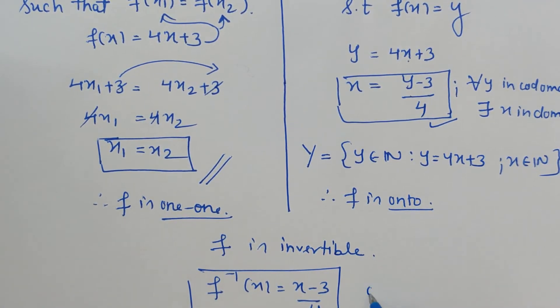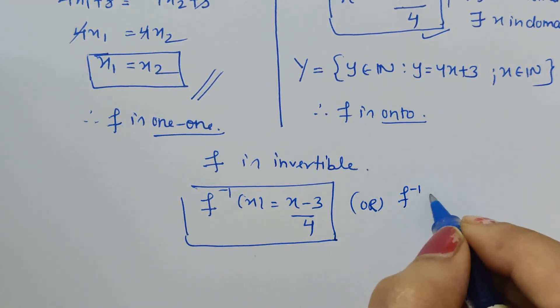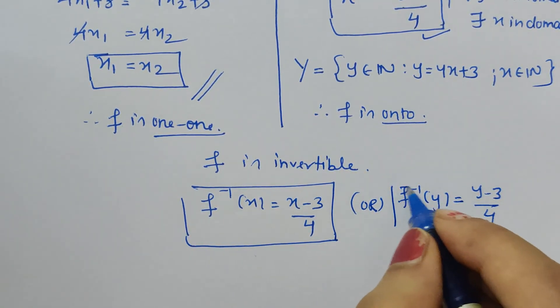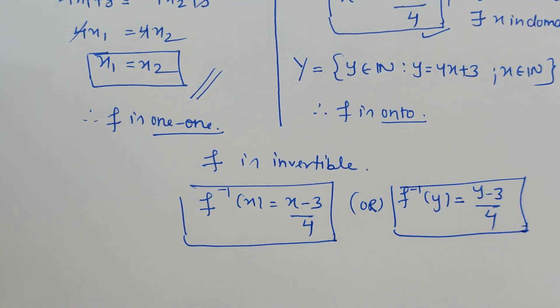Or we can also write f inverse y is equal to (y minus 3) upon 4. So these are the ways of writing inverse of a function. So this is what is the inverse. Thank you.